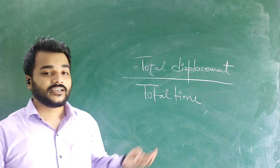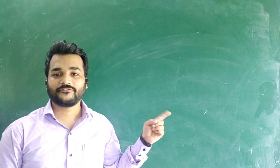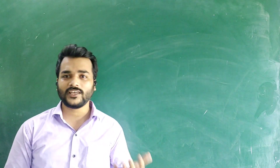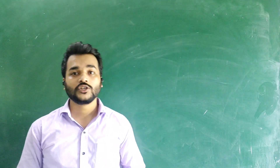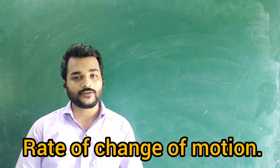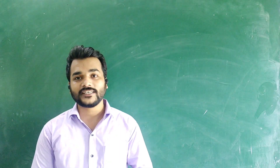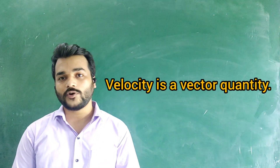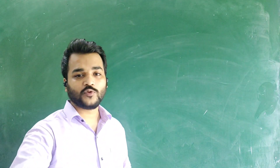The next question is: differentiate between speed and velocity. Speed can be defined as the rate of change of motion, and velocity is the rate of change of motion in a particular direction. Speed is a scalar quantity and velocity is a vector quantity.